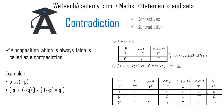We observe that the last column of the truth table contains only false values, so we call this type of compound statement a contradiction. This was a basic introduction on contradiction. Hope you understood the concept.